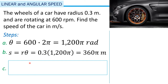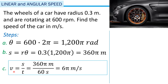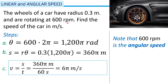Next, we solve for distance s, where arc length s equals radius times theta. That is 0.3 meters times 1200 pi, which equals 360 pi meters. Now the linear speed is s over time. From the given, the rotation is 600 revolutions per minute, but we need meters per second.